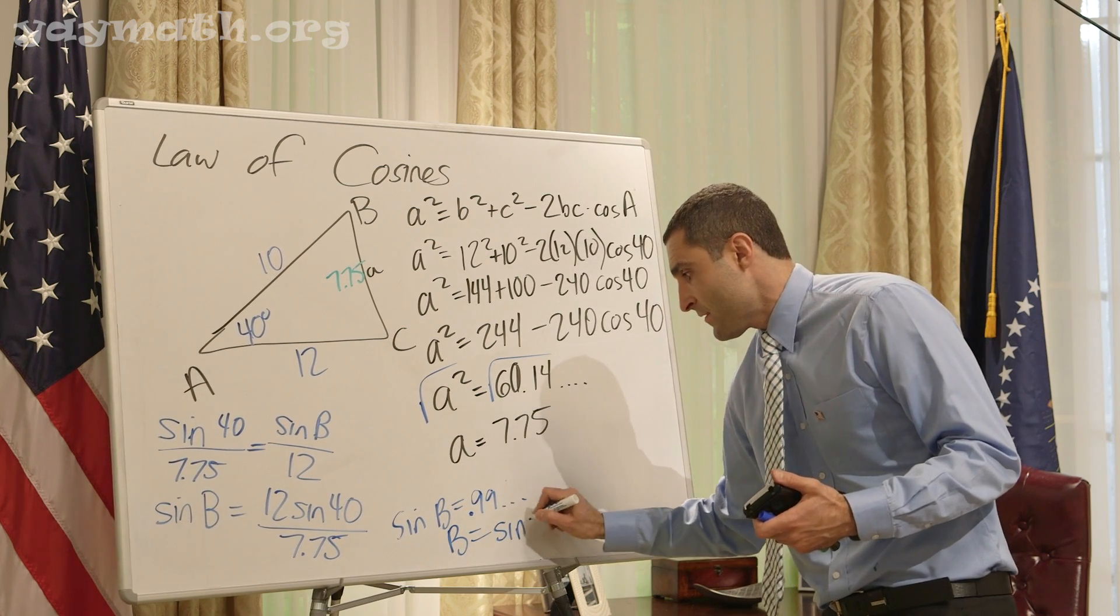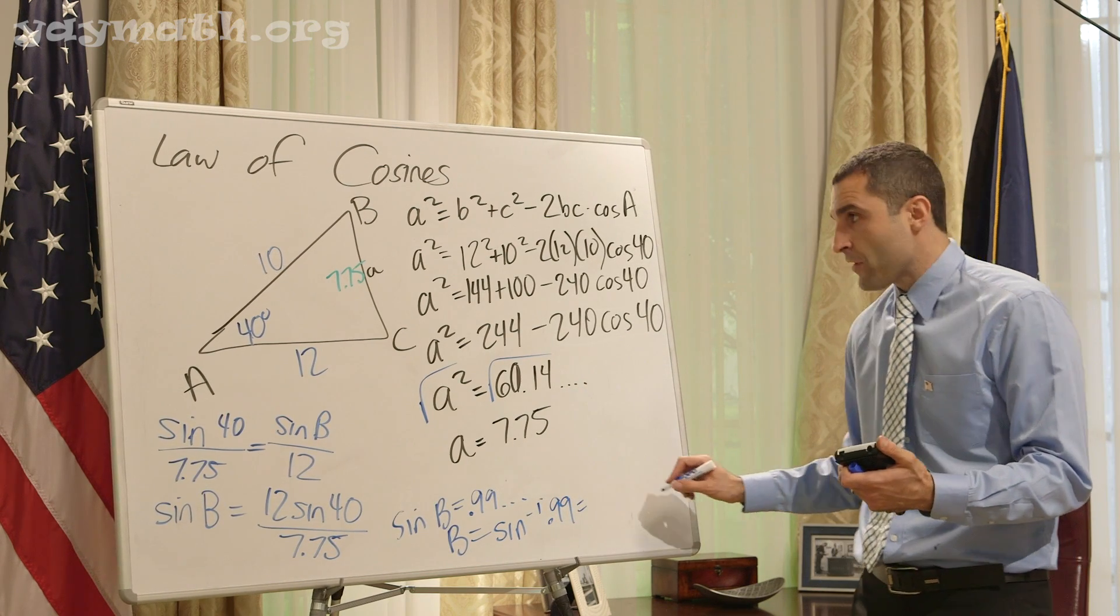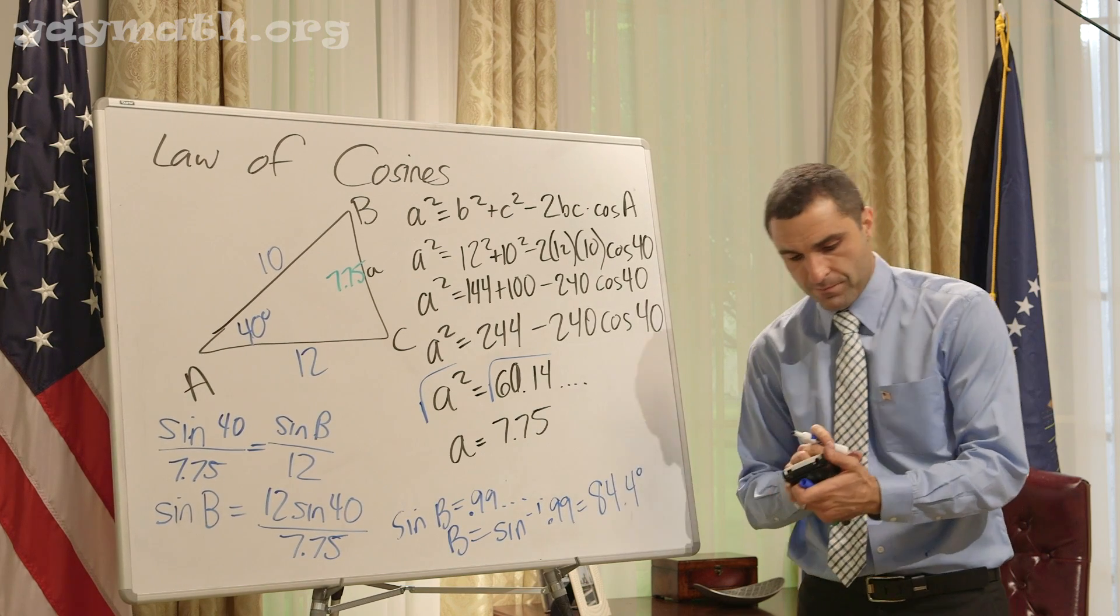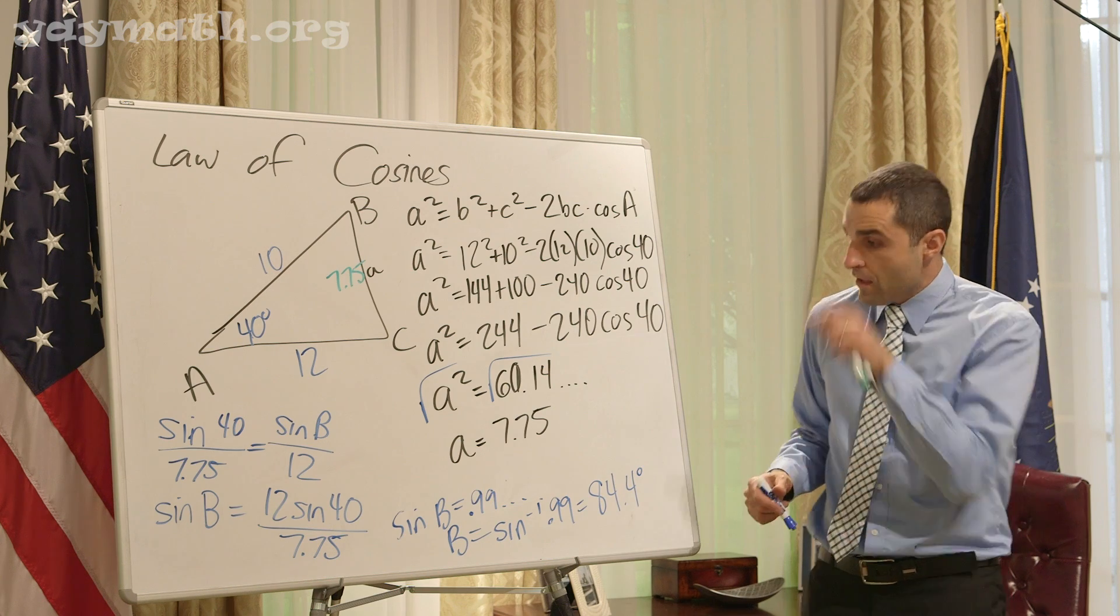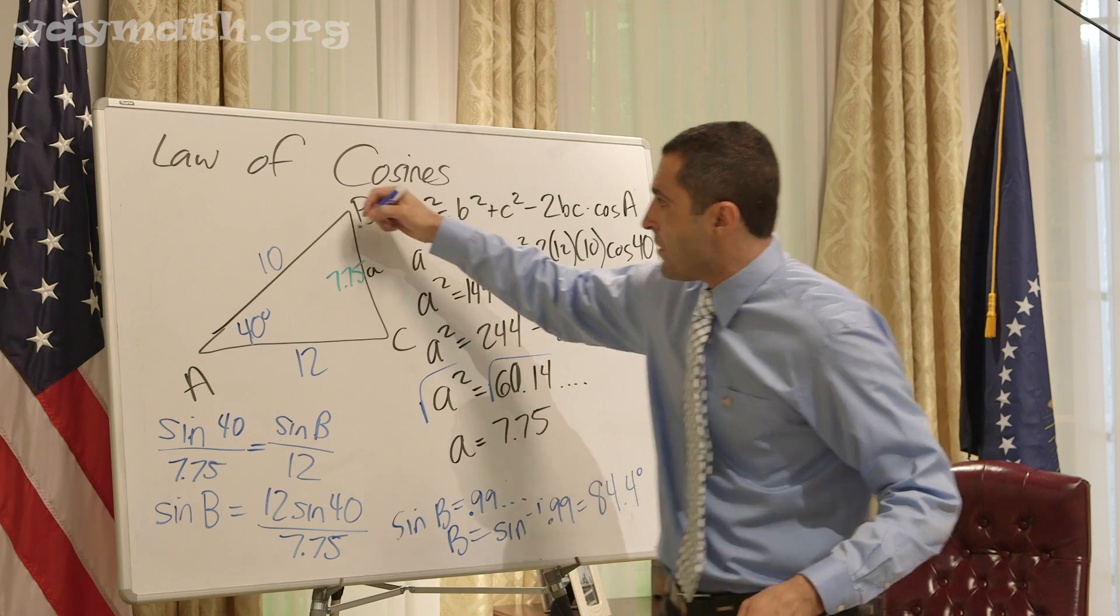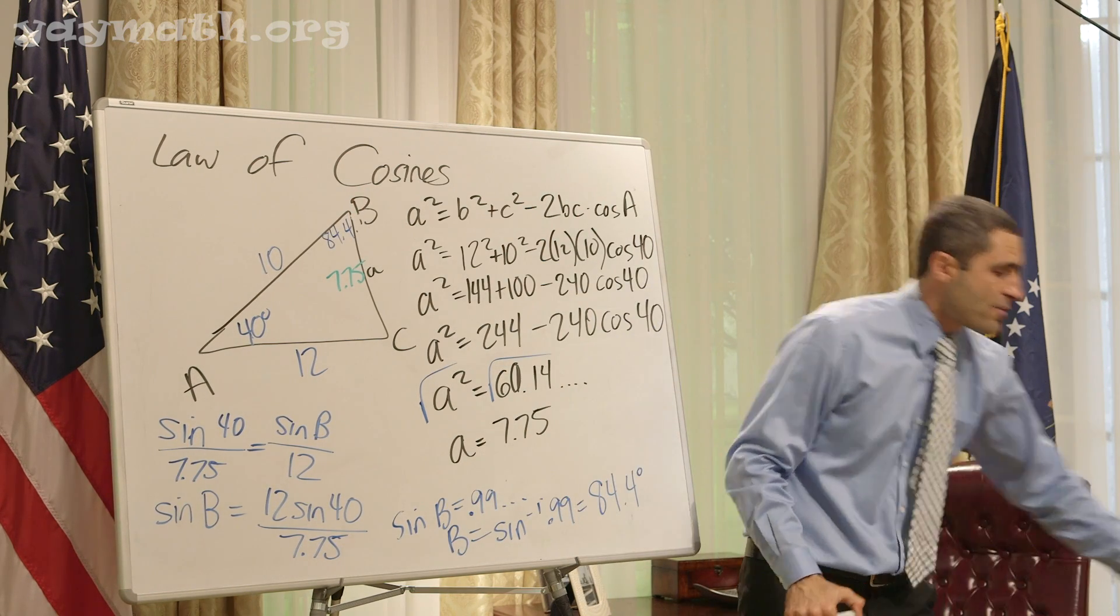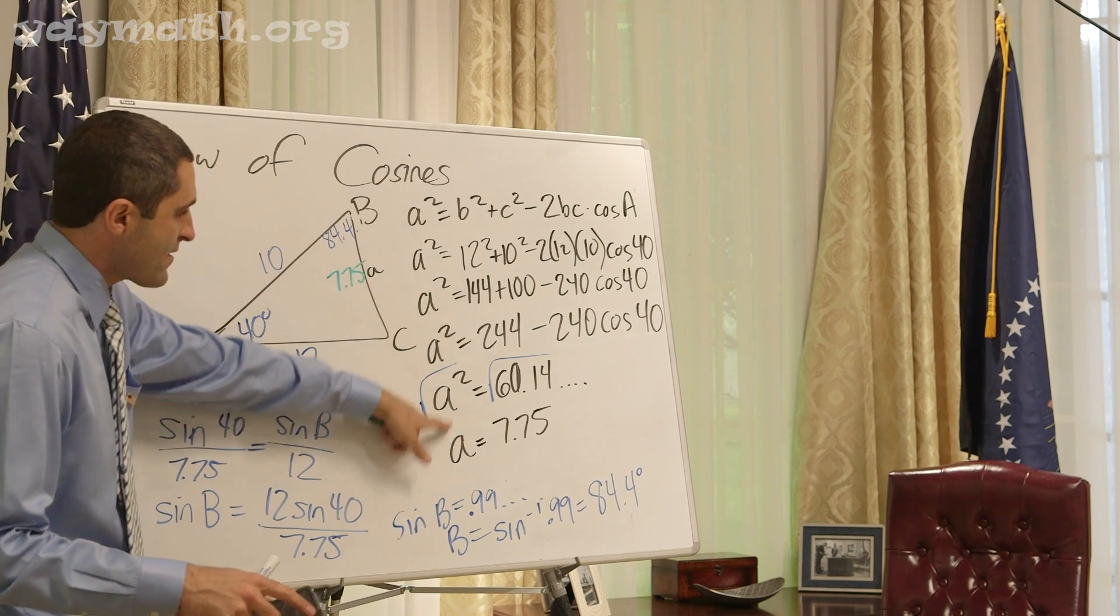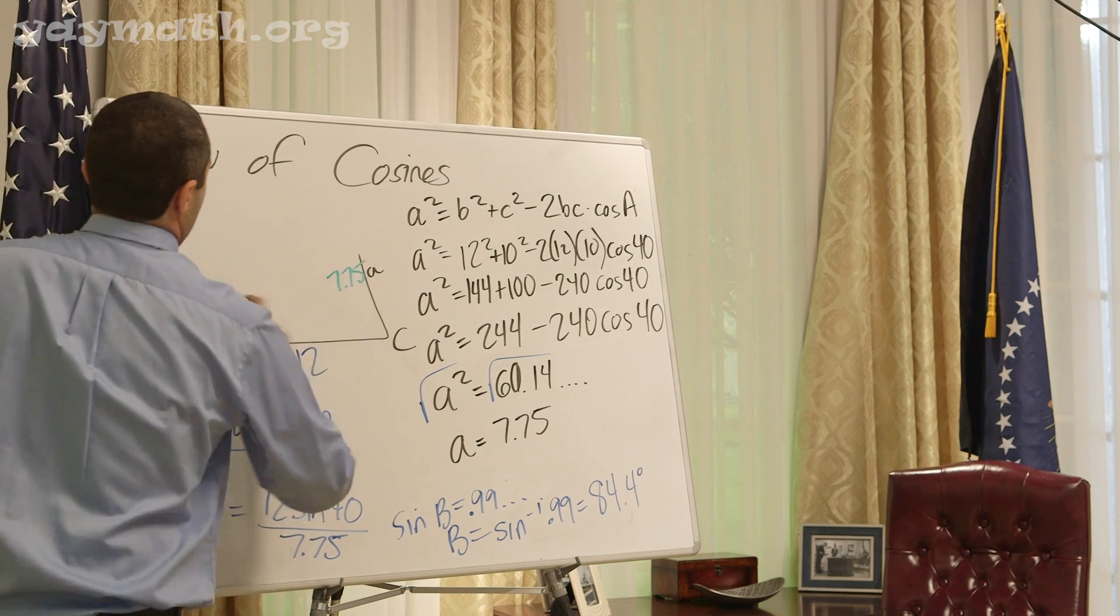Let's see, 12 sine 40 divided by 7.75. I'm getting 0.99. So b equals inverse sine of 0.99. I got 84.4 degrees. Let's do one more triangle for Law of Cosines.